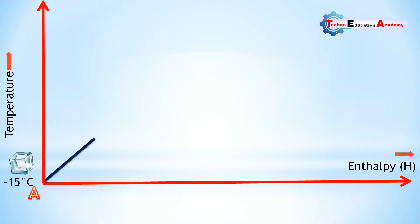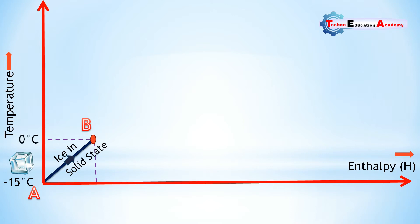As heat is added to the ice, the temperature of the ice will increase from minus 15 degree Celsius to 0 degree Celsius. This process is represented by line AB on the diagram. Up to point B, the ice will remain in solid state because 0 degree Celsius is the freezing point of ice, so at minus 10, minus 9, minus 5 degree it will remain in ice form.